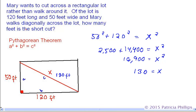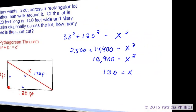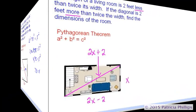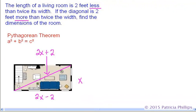Okay, let's do another one. The length of a living room is 2 feet less than twice its width. If the diagonal is 2 feet more than twice the width, find the dimensions of the room.